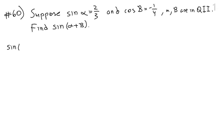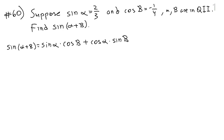From the formula sheet, sine of alpha plus beta equals sine of alpha times cosine of beta plus cosine of alpha times sine of beta. There are four parts: sine of alpha and cosine of beta are given, but cosine of alpha and sine of beta are not yet known. We can figure these out from the given information.